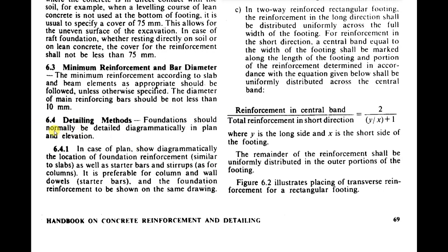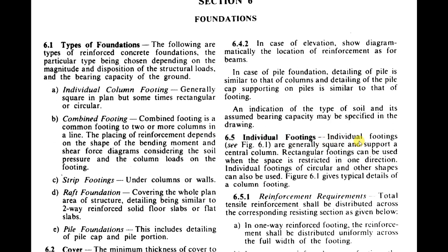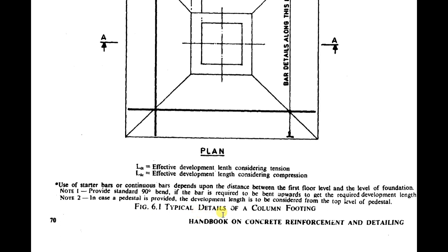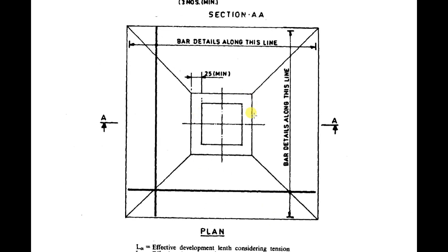For detailing methods, foundations should be detailed diagrammatically in plan and elevation. Any type of footing — isolated or combined — needs to be represented in plan and section. Figure 6.1 shows typical details of a column footing. Individual footings are generally square and support a central column; rectangular footings can be used when space is restricted in one direction. Circular and other shapes can also be used.